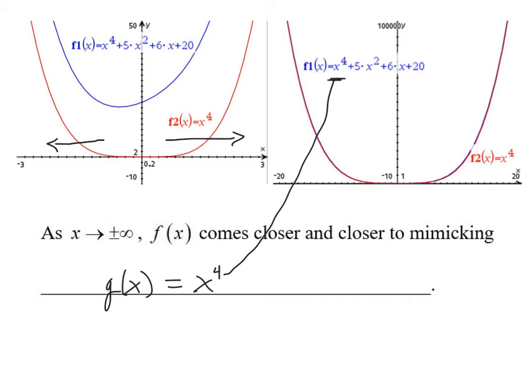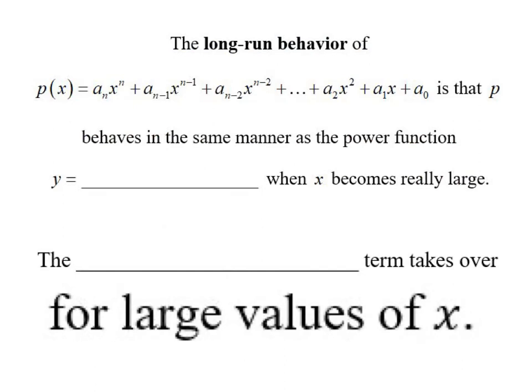So essentially, as we were saying, the leading term takes over. However, all the other terms kind of don't matter as much because you're only squaring it, you're only multiplying your x's by 6, and adding 20 is next to nothing when you're raising your large numbers like 10,000 to the fourth power. Even 20 to the fourth power seems to be enough.